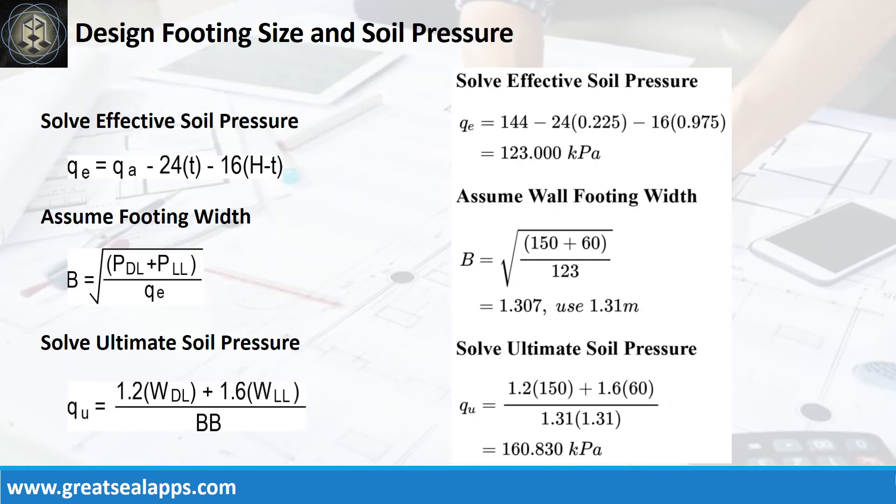Given allowable soil pressure equals 144 kPa, depth from natural grade line equals 1,200 mm, and assumed footing depth equals 225 mm, the effective soil pressure is 123 kPa.